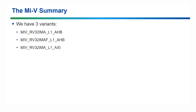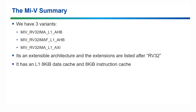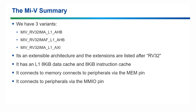Before we move on, let's summarise what we've gone over so far. We have three versions of the Mi5 core: the ORV32 IMA AHB, the ORV32 IMAF AHB and the ORV32 IMA AXI versions. We know that RISC-V is extensible and we can find out what the different extensions are after the ORV32 in the name. The core has an L1 8KB data cache and an 8KB instruction cache, and we know what the MEM and MMIO pins are for.